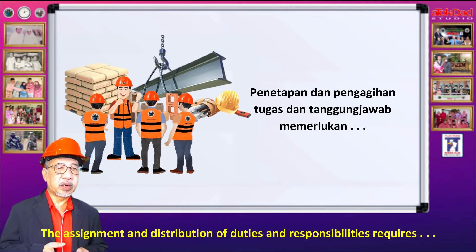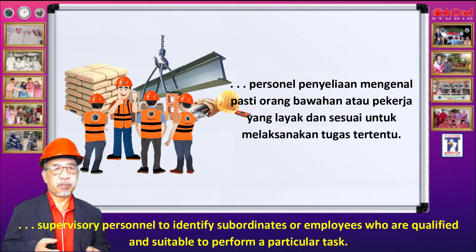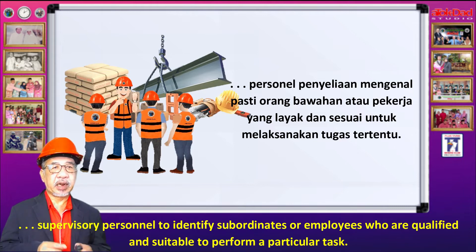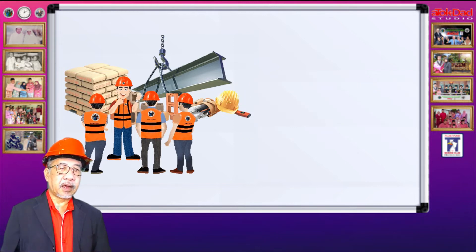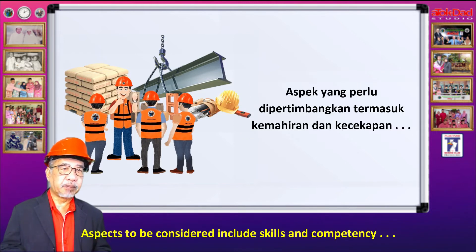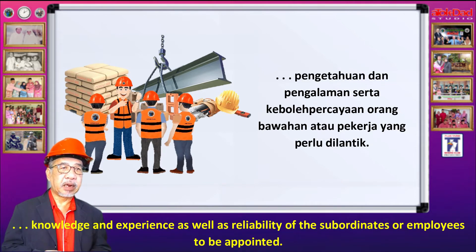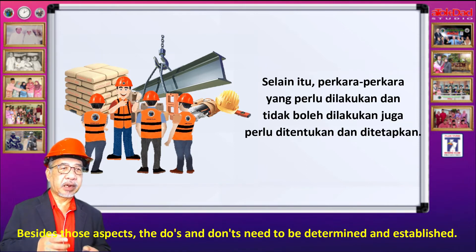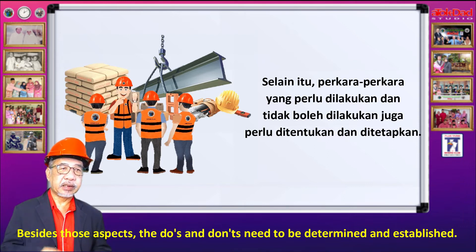Penetapan dan pengagihan tugas dan tanggungjawab memerlukan personel penyeliaan mengenalpasti orang bawahan atau pekerja yang layak dan sesuai untuk melaksanakan tugas tersebut. Aspek yang perlu dipertimbangkan termasuk kemahiran dan kecekapan, pengetahuan dan pengalaman, serta kebolehpercayaan orang bawahan atau pekerja yang perlu dilantik. Selain itu, perkara-perkara yang perlu dilakukan dan tidak boleh dilakukan juga perlu ditentukan dan ditetapkan.